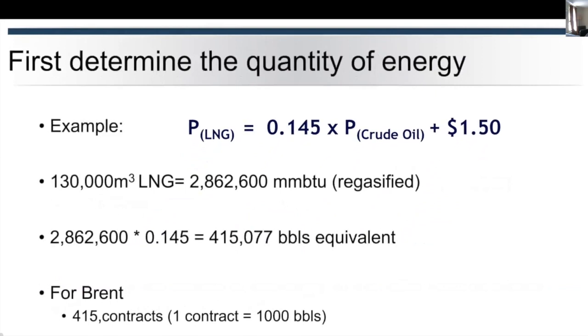By taking the example here, what we're doing is looking at: what is the value of that 130,000 cubic meters of LNG? Well, it's 2.8 million mmBTU of regasified LNG. We can use the formula of 0.145 to work out what the equivalent of that is in barrels of oil. So 2.8 million mmBTU times by our parity formula—not the actual difference because what we're trying to do is get an accurate hedge, an accurate financial hedge of this.